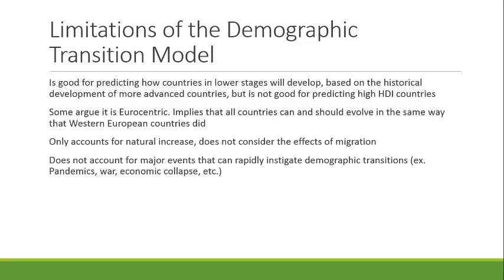There's also the argument that this is a Eurocentric model — it's based on the development of Western European countries. This implies that all countries can and should evolve in the same way Western European countries did, but there's not always one path to progress, which may limit our scope of how countries develop. Additionally, the model only accounts for natural increase — it only looks at birth rates and death rates and doesn't consider the effects of migration, which as we saw with stage five, can play a huge role in demographics.